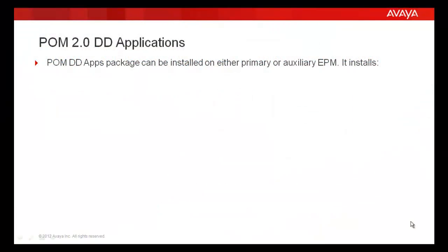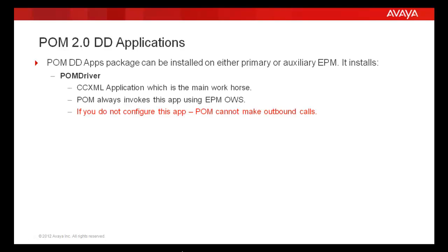POM 2.0 comes with a DD application package that can be installed either on primary or on auxiliary EPM, and it installs the following applications. Its main application is POMDriver, which is a CCXML based application. It always invokes this application while making any outbound calls, and for this it uses Experience Portal Manager's outbound web service. If you don't configure this application, POM cannot make any outbound calls.